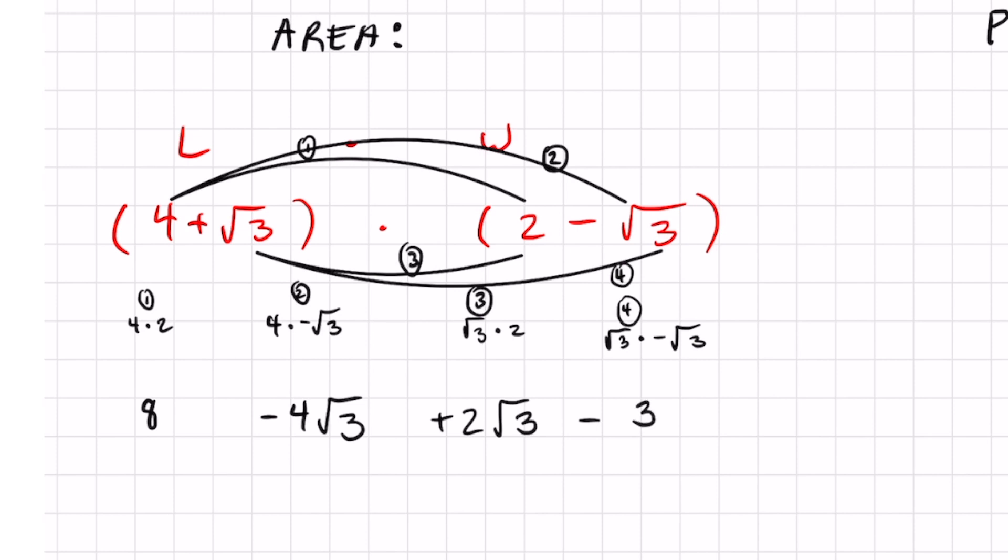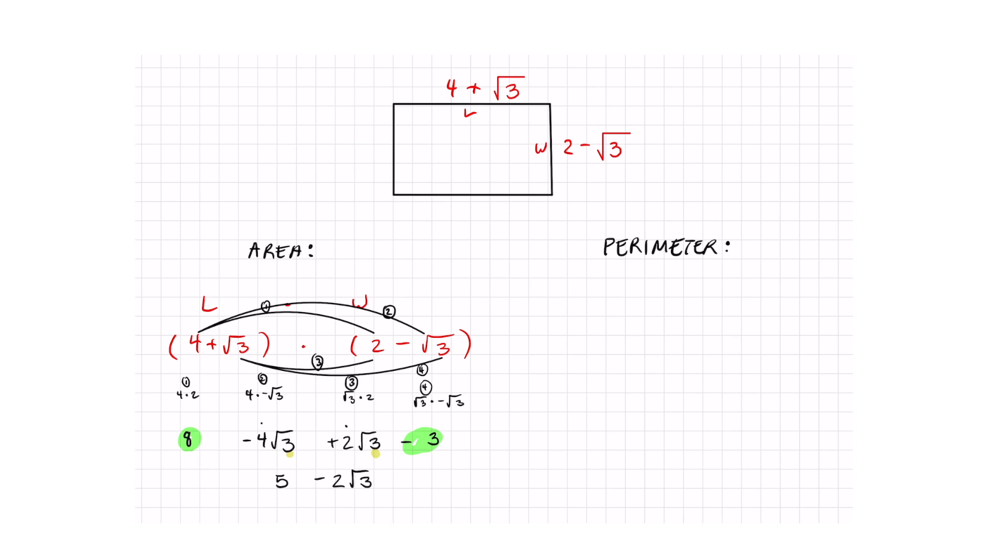At this point it is just combined like terms like 8 and negative 3 I can combine because those are just both numbers. That's going to equal 5. Now you want to check if your square roots have the same root which it does, it has square root of 3. So in that case all you have to do is add the numbers in the front. Negative 4 plus 2 is negative 2 root 3. That is my area, 5 minus 2 root 3, and if you want to put square units go for it just in case your teacher requires that.